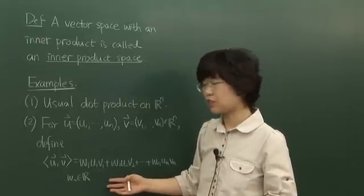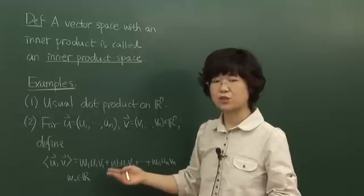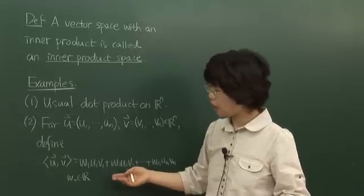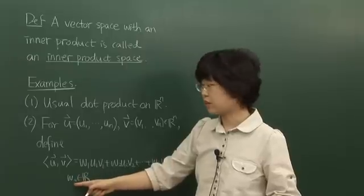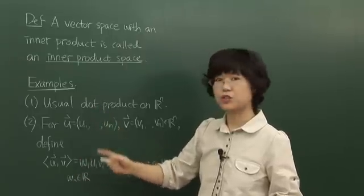Therefore, this is an inner product called weighted Euclidean inner product. And especially if each Wi is 1, then it coincides with usual dot product.